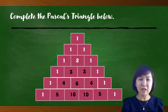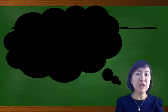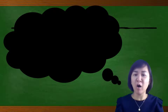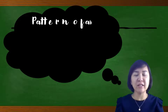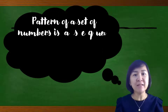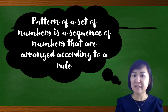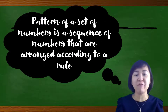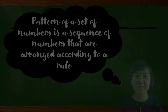After trying these two examples of Pascal's Triangle, we can conclude that a pattern of a set of numbers is a sequence of numbers arranged according to a rule.